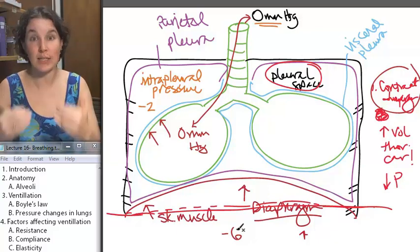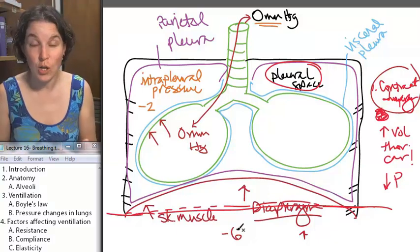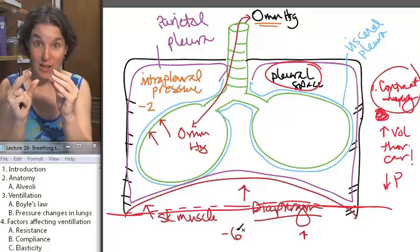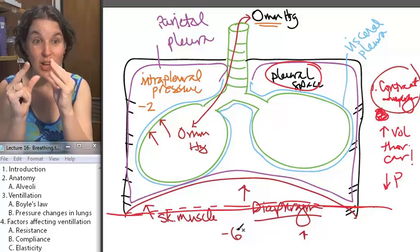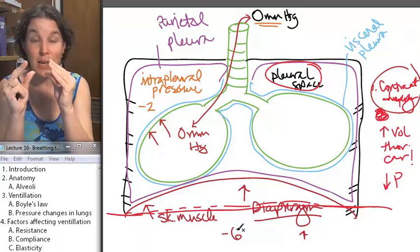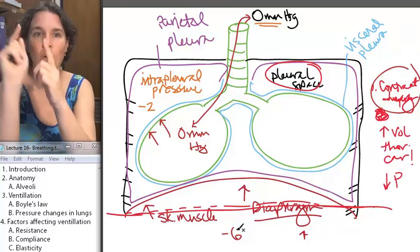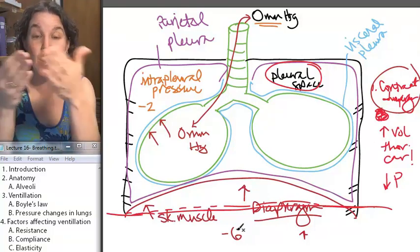Upon contracting the diaphragm, my pressure actually drops probably to like negative six. When you relax, what does that do? Dude, that sucks air in. When you relax and you decrease the volume of that space, I decrease the volume by relaxing my diaphragm. That's going to increase the pressure. And where is the air going to go? It's going to go out.